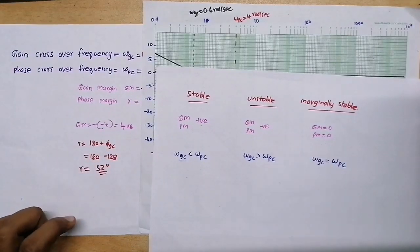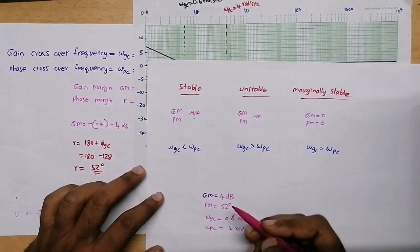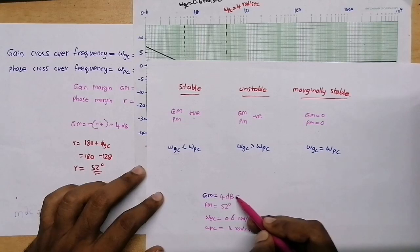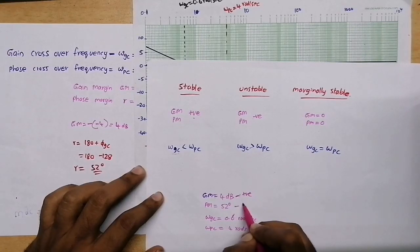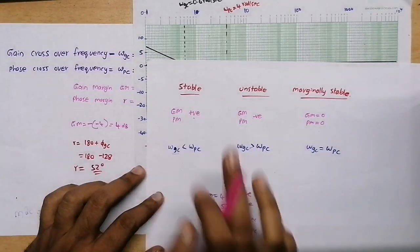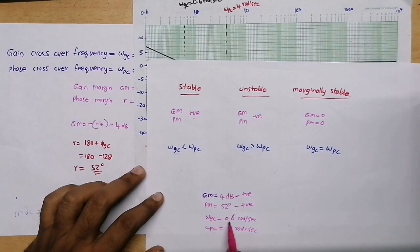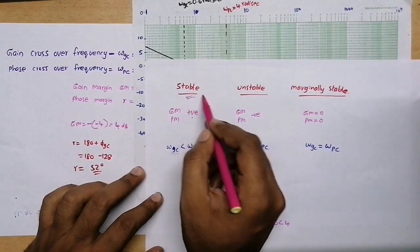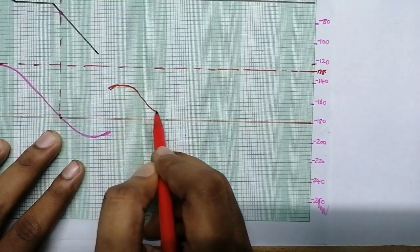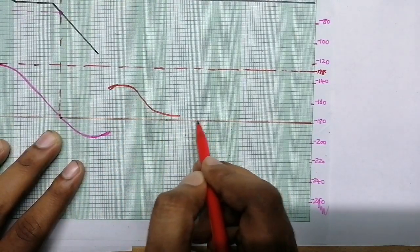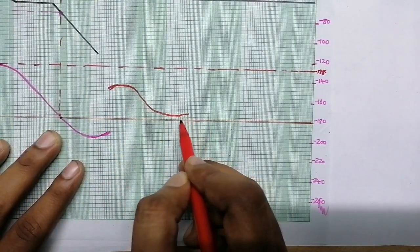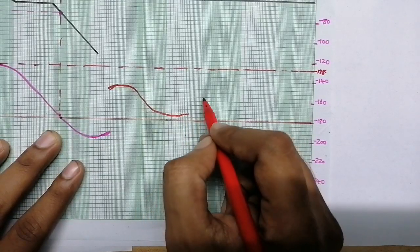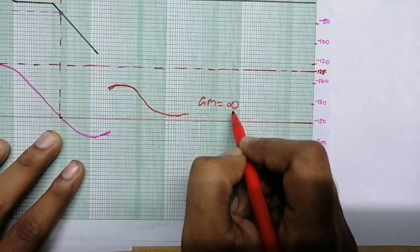In this question, gain margin is positive and phase margin is positive, so the system is stable. Also, gain crossover frequency is 0.6 and phase crossover frequency is 4, so 0.6 is less than 4 — system is stable. Suppose the phase plot is not crossing the minus 180 degree line; at that time the gain margin will be infinity.